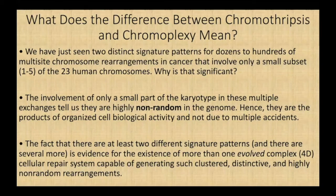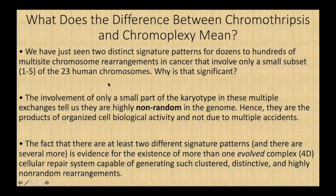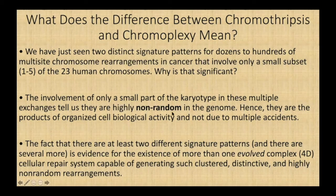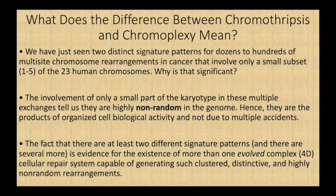What does the difference between chromothripsis and chromoplexy mean? We have just seen two distinct signature patterns where dozens to hundreds of multi-site chromosome rearrangements in cancer involve only a small set — between one and five — of the 23 human chromosomes. The involvement of only a small part of the karyotype in these multiple exchanges tells us that they are highly non-random in the genome. Hence, they are the products of organized cell biological activity, and not due to multiple accidents. The fact that there are at least two different signatures is evidence for the existence of more than one evolved, complex, four-dimensional cellular repair system, capable of generating such clustered, distinctive, and highly non-random rearrangements.